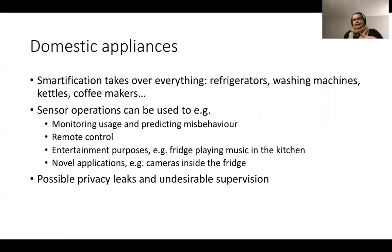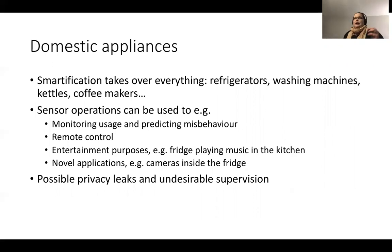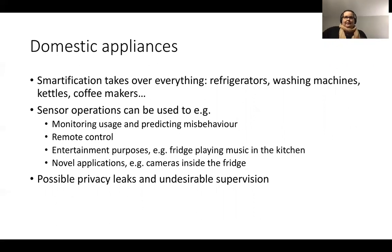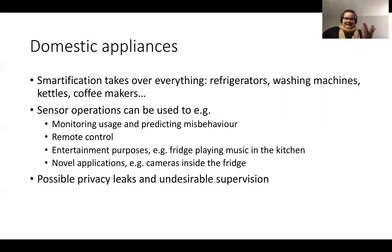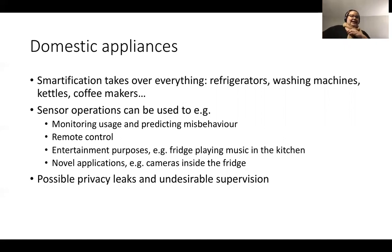There are also washing machines and coffee makers that can be controlled remotely. The smartification here is that you can control them using your smartphone without being at the location — though of course with washing machines you still need to put your clothes in to get them washed, so it's not fully automatic in that sense.